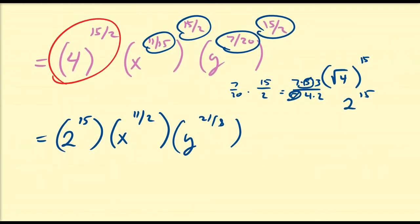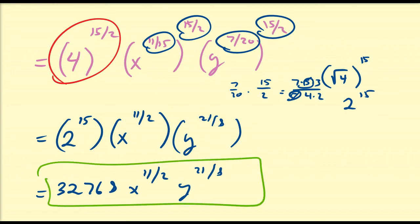So if you expand 2^15, that's 32,768, times x^(11/2) times y^(21/8). Typically you probably won't want to write this in radical form since the denominators of x and y's exponents are different values, so you'll probably want to leave it like this. Anyway, this is a review of the properties of exponents and how they connect to radical expressions. We'll get to radical expressions a bit later, but I hope you enjoyed.